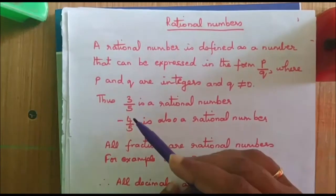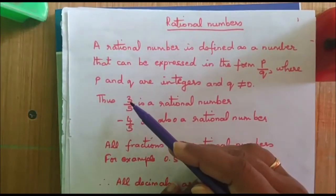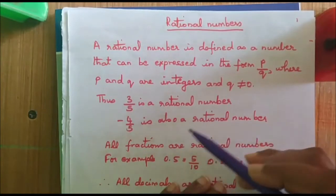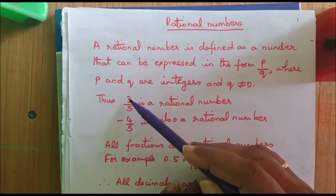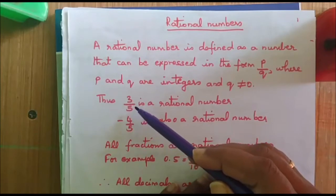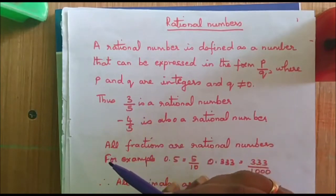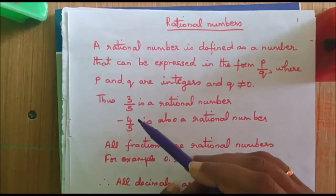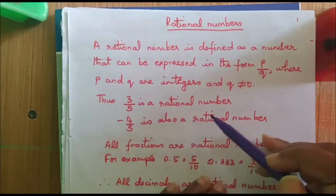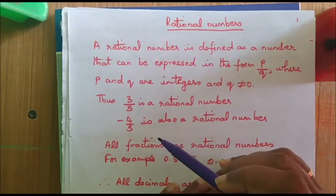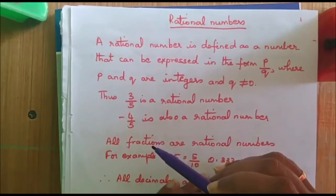Let us take a rational number 3 by 5. We call 3 by 5 as a rational number. Why? Because 3 and 5 are integers and 5 is not equal to 0. Hence, it satisfies the conditions for a rational number.